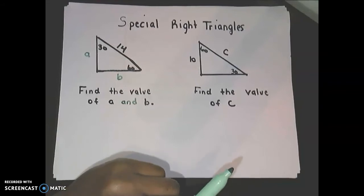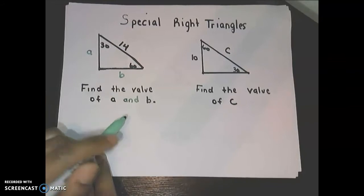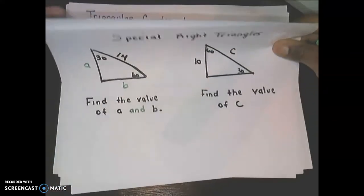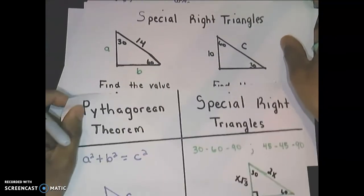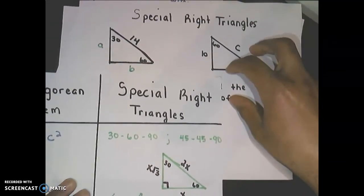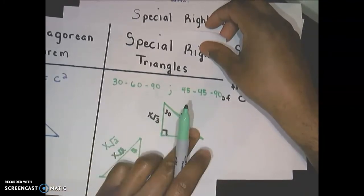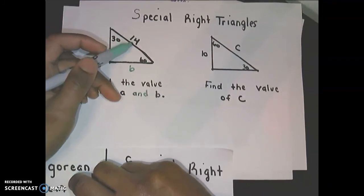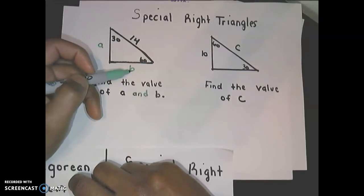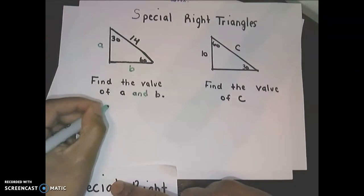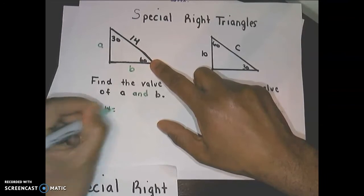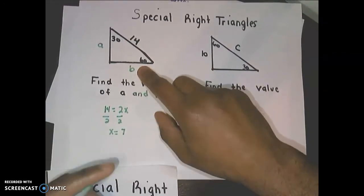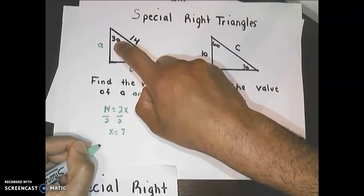The first example says find the value of a and b. We have a special right triangle of 30-60-90. Remember, across from 30 is the smallest side, and the hypotenuse is double that side. They've given us the hypotenuse, which is 14, so 14 equals 2X. Dividing both sides by 2 gives X equals 7, so b equals 7.